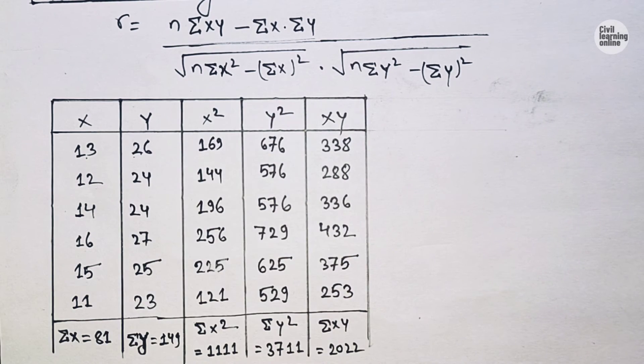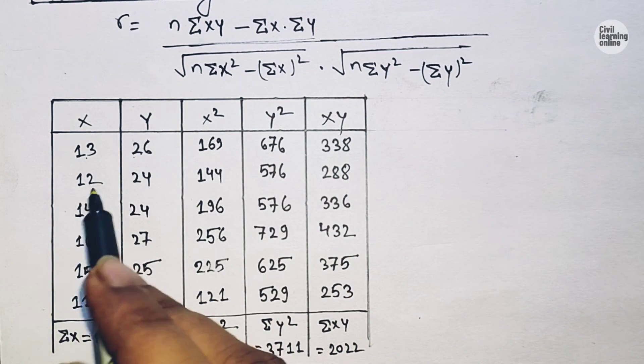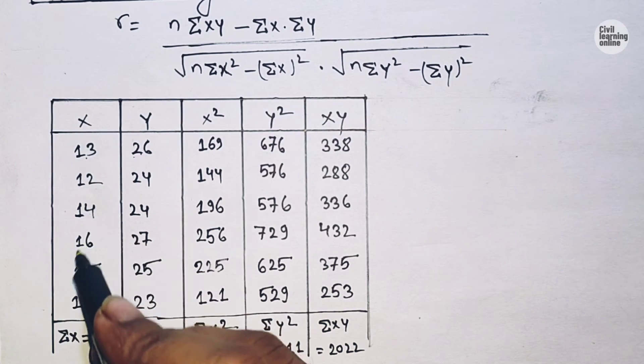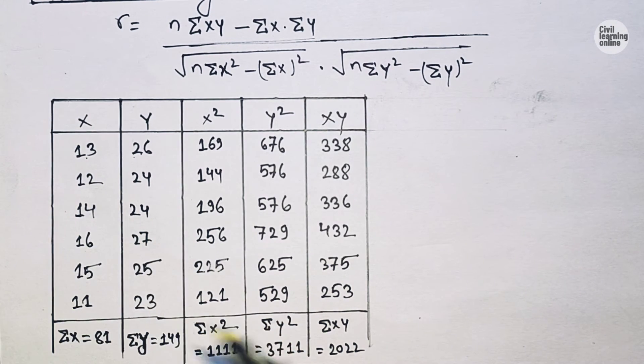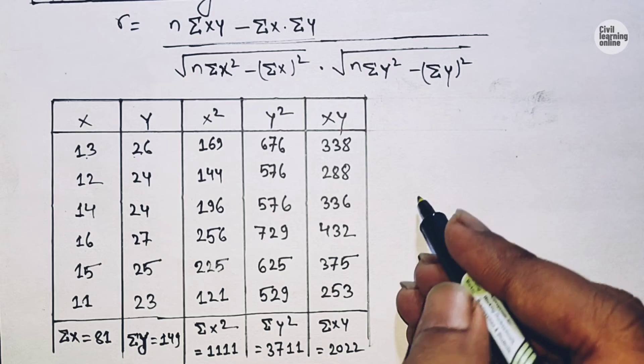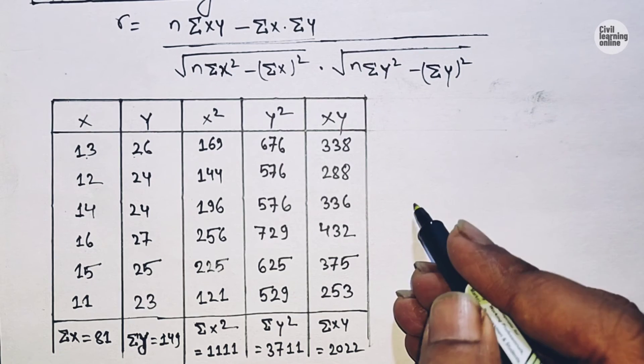Now put the value of each term into the equation. Here n equals the number of items: counting gives us 1, 2, 3, 4, 5, 6 — so n equals 6.